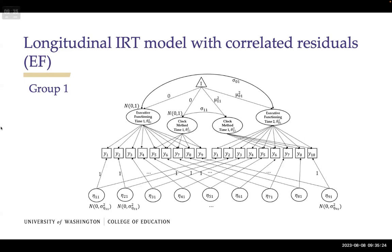As a quality control check, we compare two different models using the same data but different structures: on the left, we pool only baseline data in a multiple-group Graded Response Model; on the right, we use ADNI-1 data with the longitudinal structure. Both models are anchored at ADNI-1 baseline data, with mean and variance of theta fixed to zero and one respectively. The results from both approaches should be similar, and indeed they were.